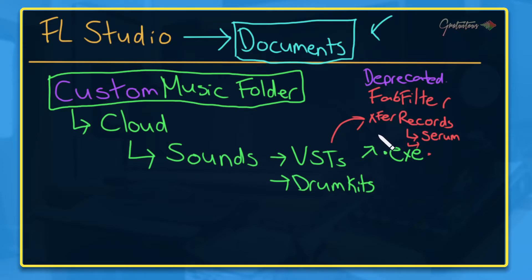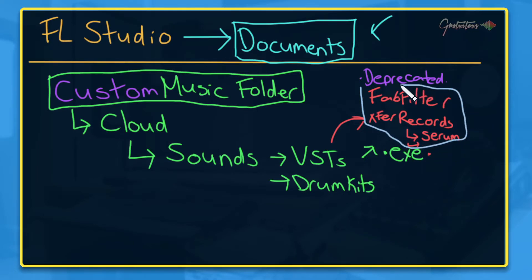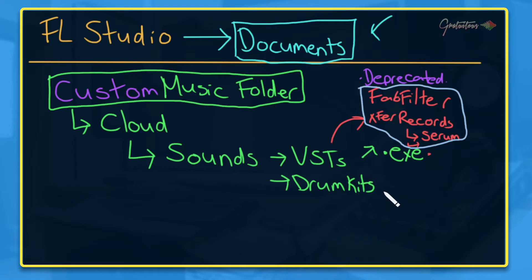The deprecated folder is for plugins you don't want to use anymore but have used on a serious project, so you still want to keep them around. You move those plugins into the deprecated folder so you still have them if you need to access them, but they're no longer in the main folder with your active plugins. Your main VST folder has only the plugins you use all the time — each with its executable file — and the deprecated folder holds the rest just in case.